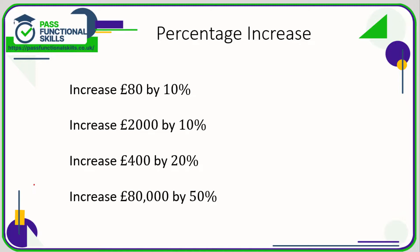Let's take a look at percentage increases and decreases. For an increase, all you need to do is work out the percentage amount and add it on. So if we're increasing 80 pounds by 10%, 10% of 80 is 8, so we're adding that on to get 88. 10% of 2000 is 200, add it on to get 2200.